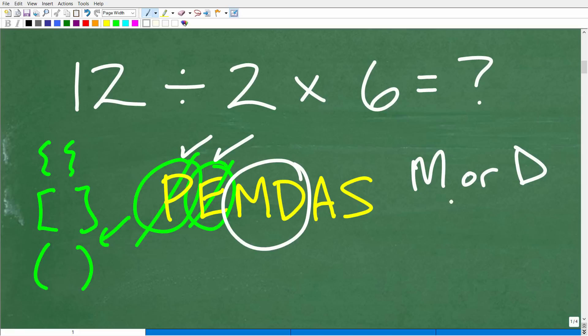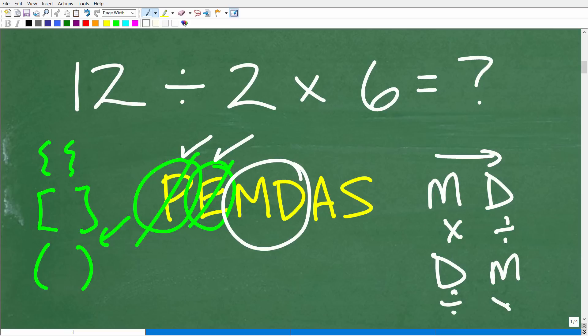So it's multiplication or division whatever you see first from left to right. So in other words if I have multiplication then division I'm gonna do it this way okay because I see multiplication first from left to right. But if I have division then multiplication I'm going to do it this way because I see division first from left to right. And of course this is our situation, I see division first from left to right so this is why we're going to take this step first.